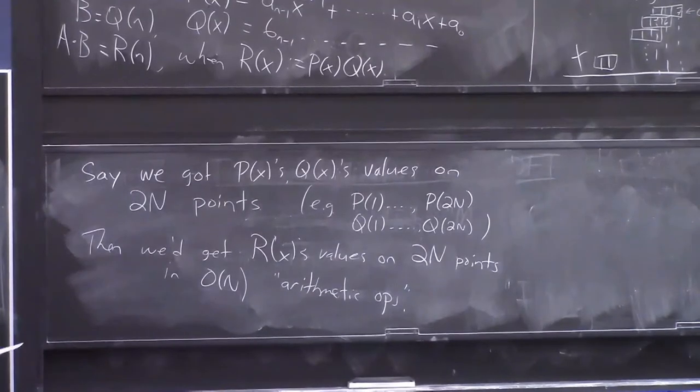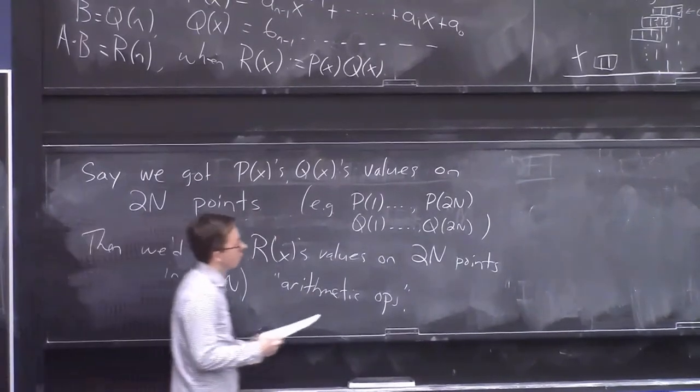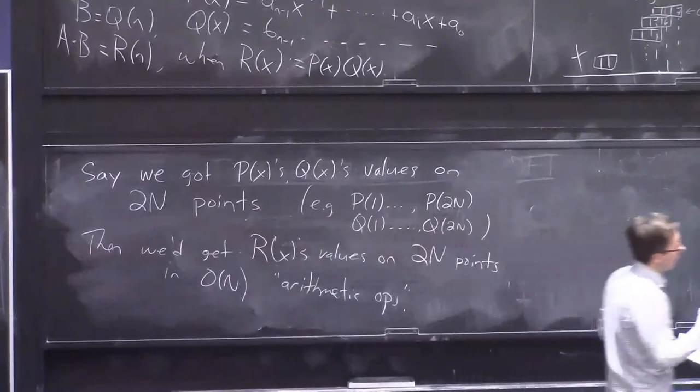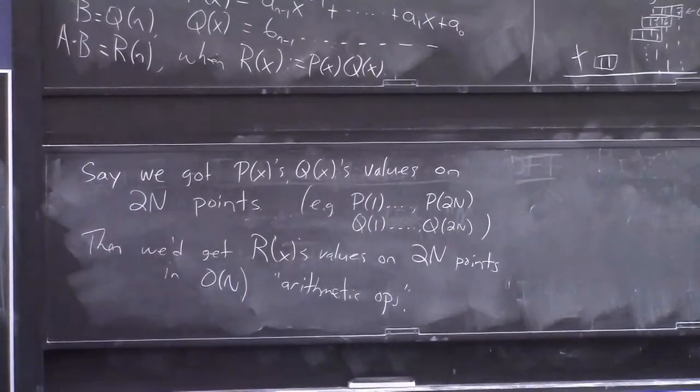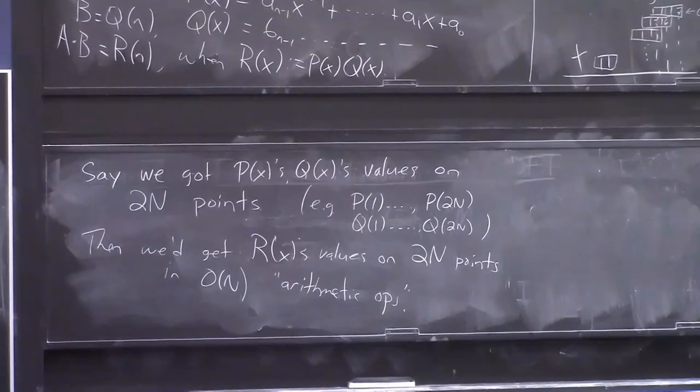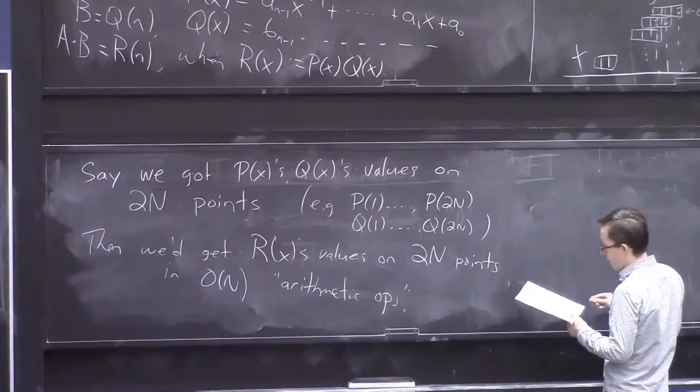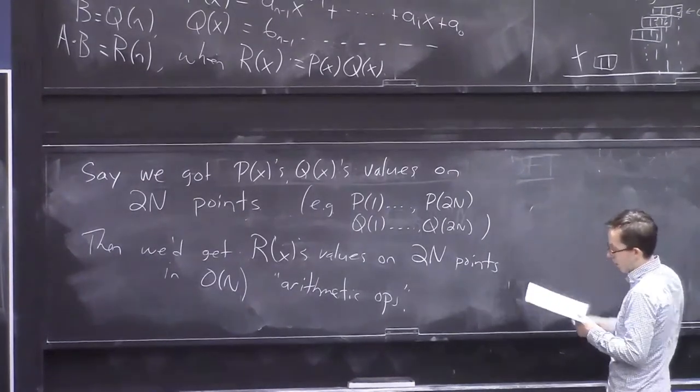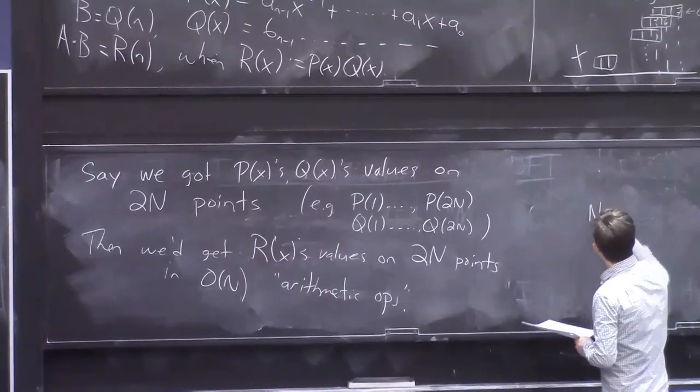Now, unfortunately, we don't have these values representations. We're given the coefficients representation of polynomials, and we want to get the coefficients representation in the end. But we are going to try to pass through the values representation to get this trick, to do this fast multiplication trick.